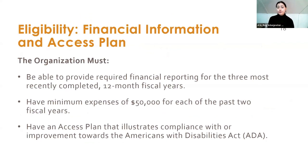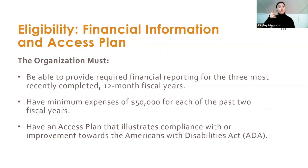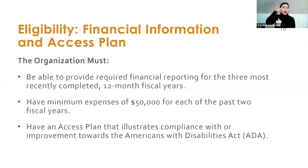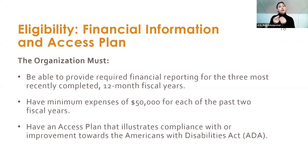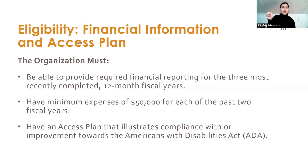Eligible organizations must be able to provide required financial reporting for the three most recently completed 12-month fiscal years as part of the application. For nonprofits, that's your 990 or 990-EZ. For cultural affiliates, that's your own internal reporting broken out from your parent organization. Organizations also need to have minimum expenses of $50,000 for each of the past two fiscal years, and they need to have an access plan that illustrates compliance with or improvement towards the Americans with Disabilities Act.